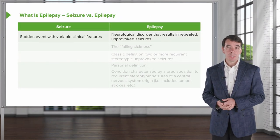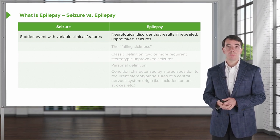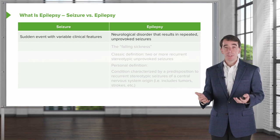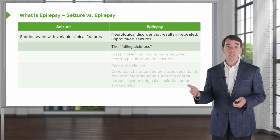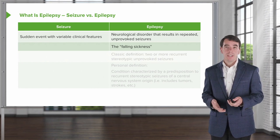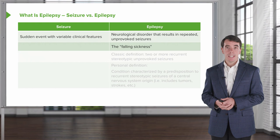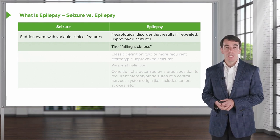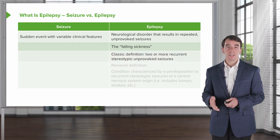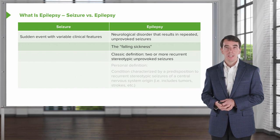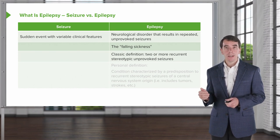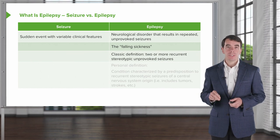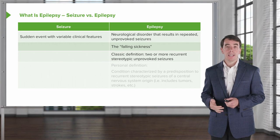If that's a seizure, what is epilepsy? Seizure and epilepsy are different. A seizure is a sudden event with variable clinical features. Epilepsy is a neurologic disorder that results in repeated, unprovoked seizures — historically described as 'the falling sickness.' The classic definition of epilepsy is two or more recurrent, stereotypic, unprovoked seizures. Anybody can have one seizure, but two becomes a diagnosis of epilepsy.